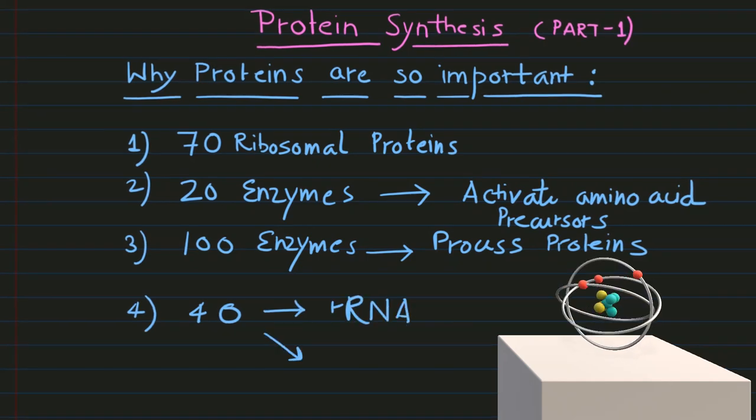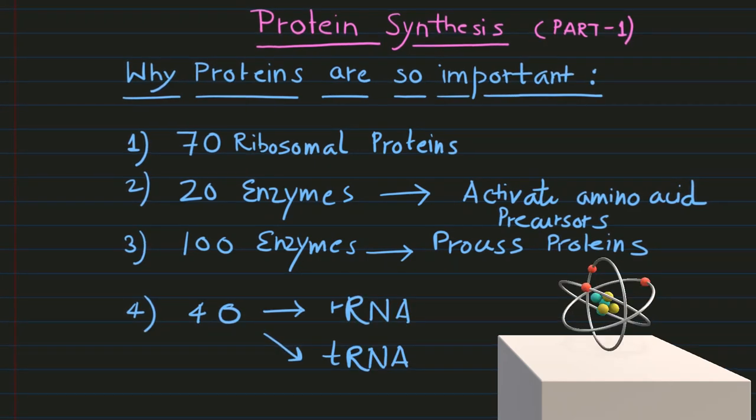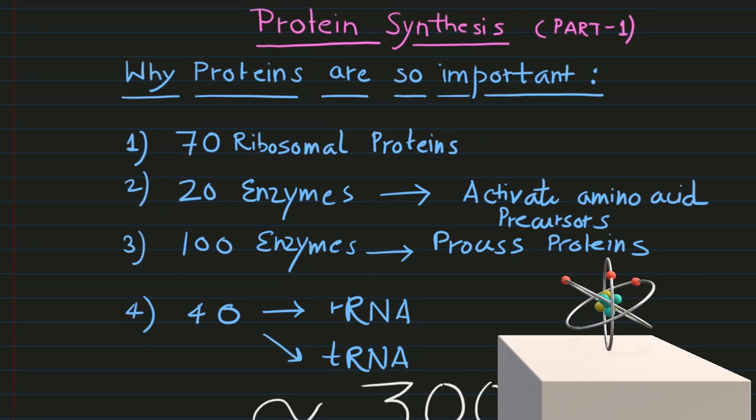We need an additional 40 rRNAs and tRNAs molecules, total 300 molecules to make polypeptide chains.